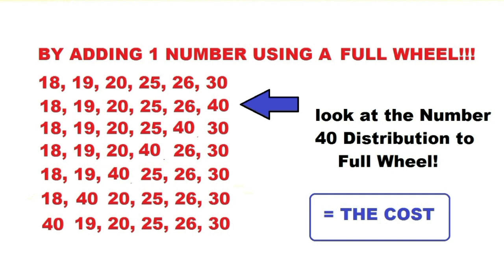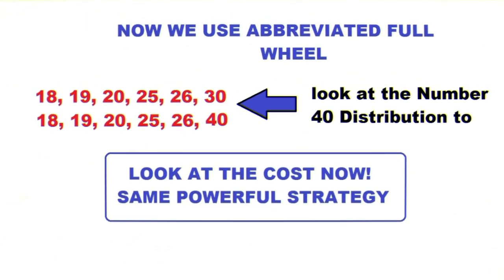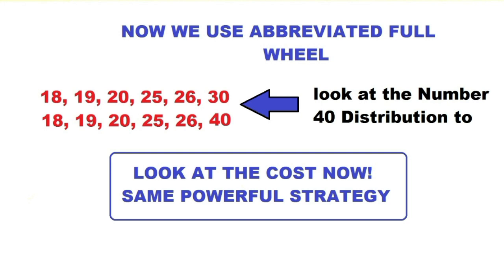See the disadvantage of the full wheel — the cost. Now we will use an abbreviated wheel and see the difference. By using an abbreviated wheel, look at the number 40 distribution: 18 19 20 25 26 30 and 18 19 20 25 26 40. That's only two combinations for our bets. Look at the cost now — same powerful strategy, same effectivity. Now this concept we will use for our main strategy and formula.